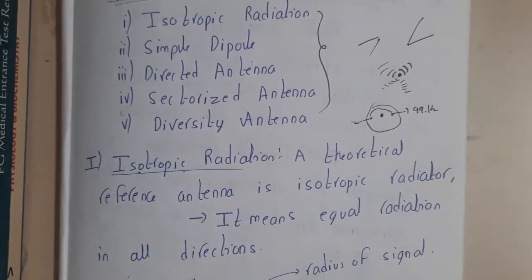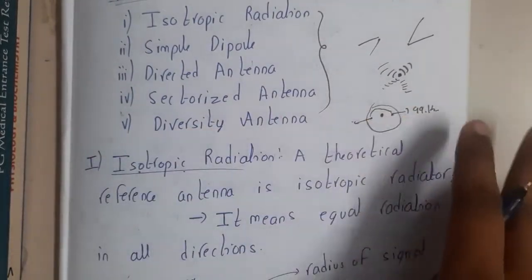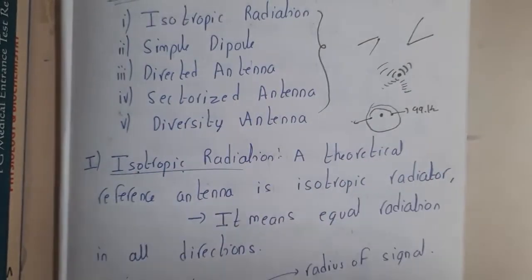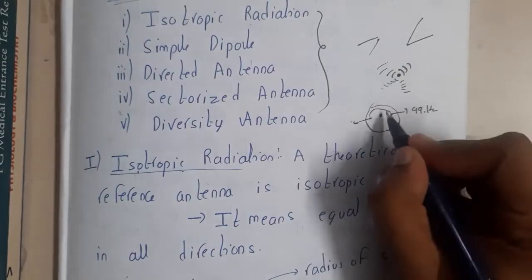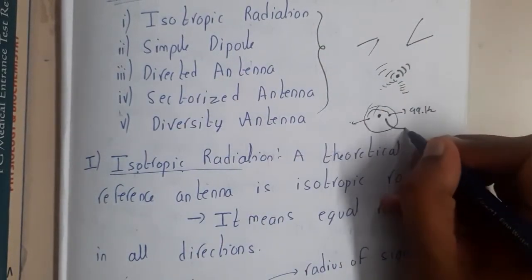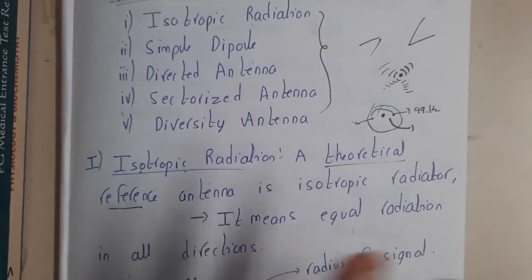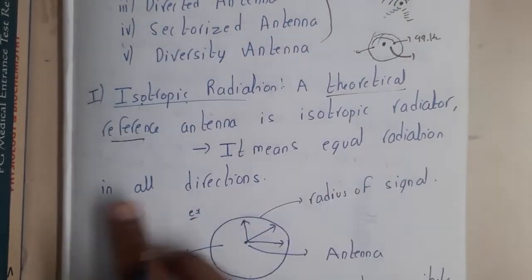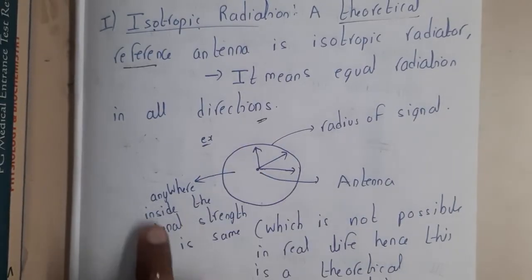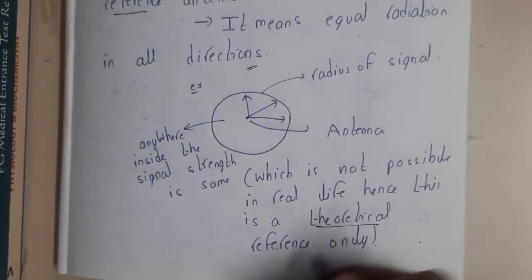Now going through the theory — isotropic antennas are a theoretical reference only. They do not exist in practice, because we have air around us with multiple noises and signals. There is no chance of sending a signal in all directions while keeping it perfectly aligned from all places. It means equal radiation in all directions, which is not possible in real life — hence this is a theoretical reference only.